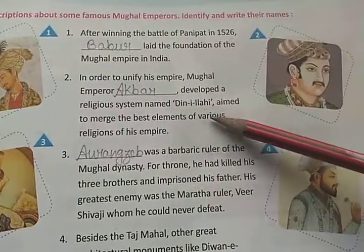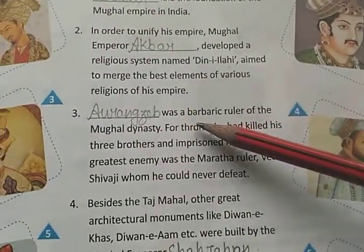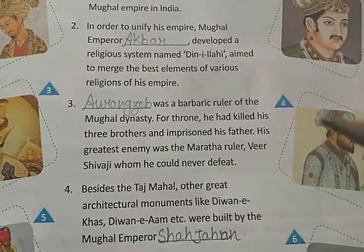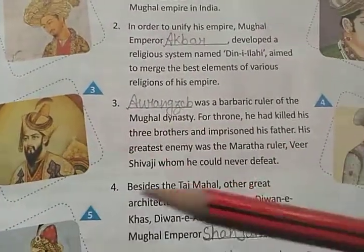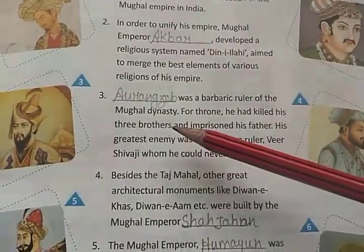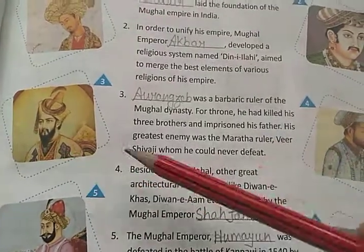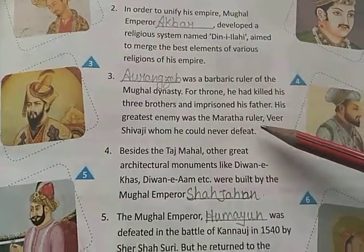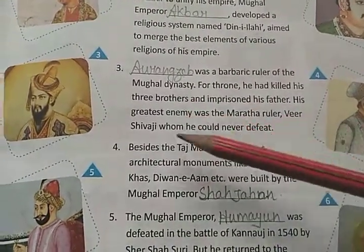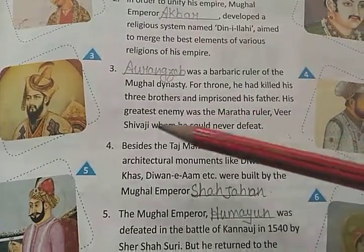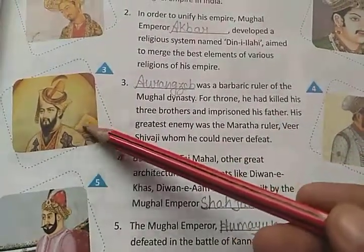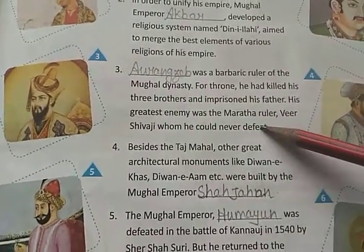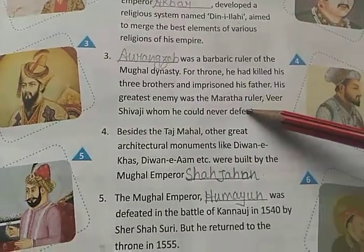The Mughal dynasty had a barbaric ruler — for the throne, he imprisoned his father and killed his three brothers. Apne pita ko karavas mein daal diye aur teeno bhaion ko murder kar diye. His greatest enemy was Maratha ruler Veer Shivaji — unke sabse bade dushman the Maratha Raja Samrath Shivaji — and he could never defeat Shivaji.